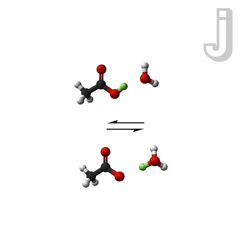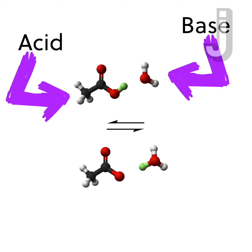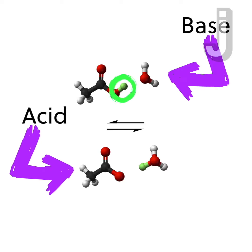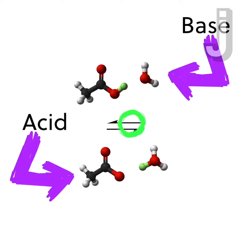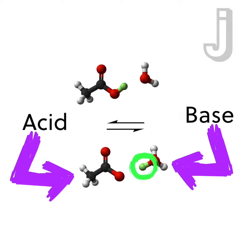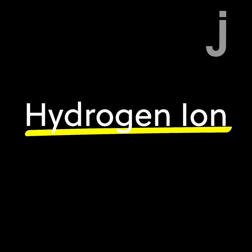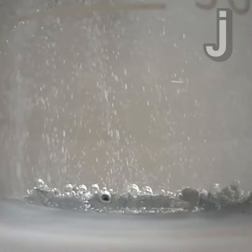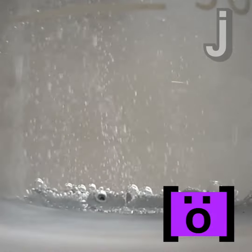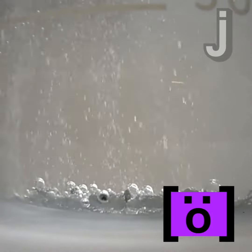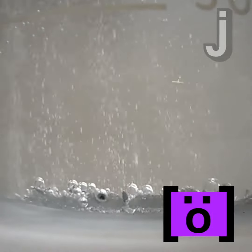A basic definition of acids and bases: an acid is a chemical substance that can give up a proton, and a base is one that can receive a proton. In chemistry, a single proton is referred to as a hydrogen ion, and being so ready to exchange ions means that acids and bases are very reactive.